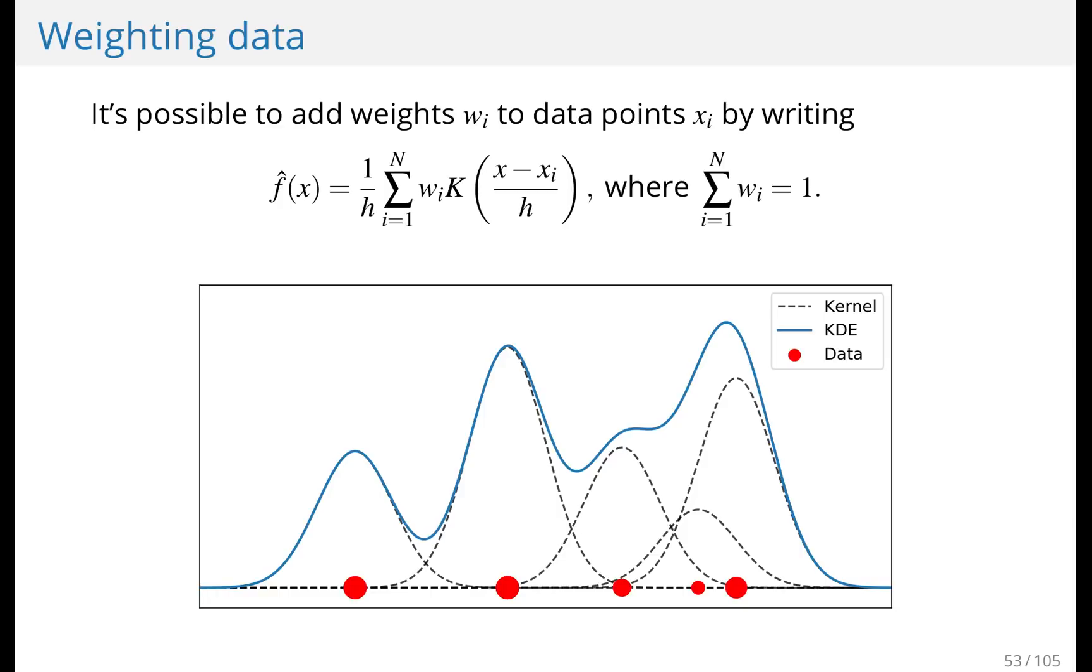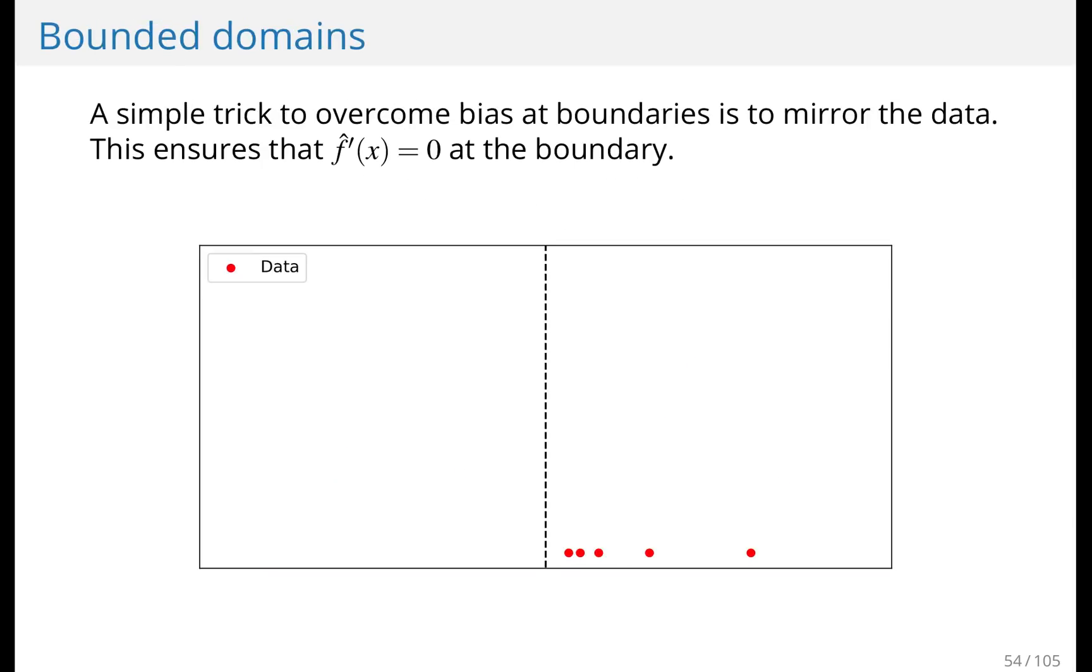There was one more thing that I want to discuss in one dimension. And that's bounded domains. It happens quite often that you know that you're working on a bounded domain. For instance, if your data is the age of people or the net worth of individuals, then you know that your density is zero when x is smaller than zero. So you know that your data is supposed to be, for instance, to the right side of some boundary. Now, if you just compute a kernel density estimate on this data, you get this.